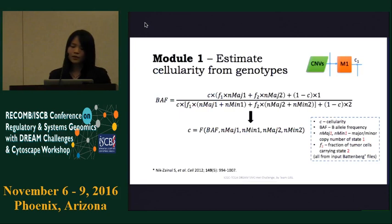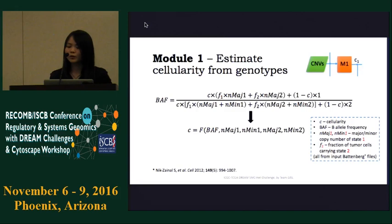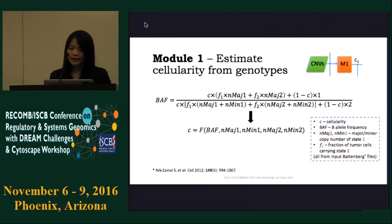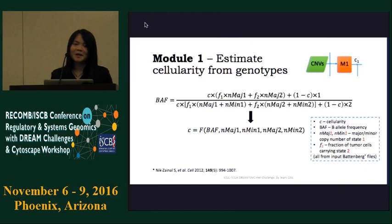The first module was designed to get an initial estimate for tumor cellularity. From experiment, we found that having a not-bad estimate at the beginning can greatly improve the decomposition accuracy afterwards. However, we are not allowed to use the Battenberg cellularity directly for subchallenge one. So we decided to use the genotype information based on the definition of B-allele frequency. All the values here come from the input Battenberg files. In practice, you can simply skip this step as long as you have a fair initial estimate in hand before doing the following steps.